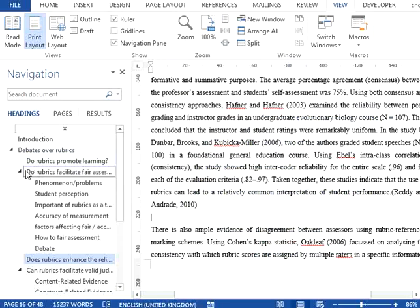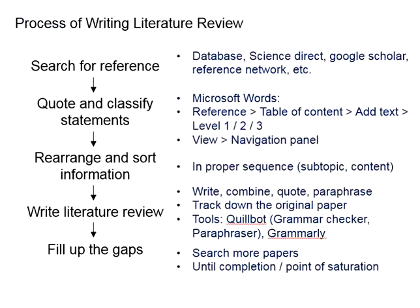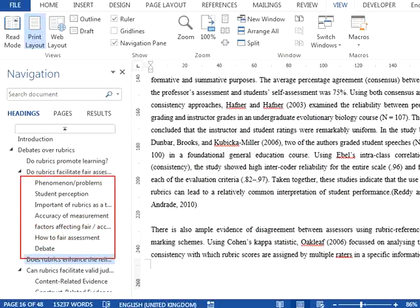Once you have the subtopics arranged, plan how you are going to write under each particular subtopic. Remember, in the previous stage you only did rough classifications of the information. Very often there are several references referring to similar points. This is when you group them together and arrange them in the proper sequence — the sequencing on the content part. In other words, you do sorting and rearrangement at the bigger picture level, then narrow down to the content. Again, imagine how you would like it presented: what content first, followed by which, and then subsequent.